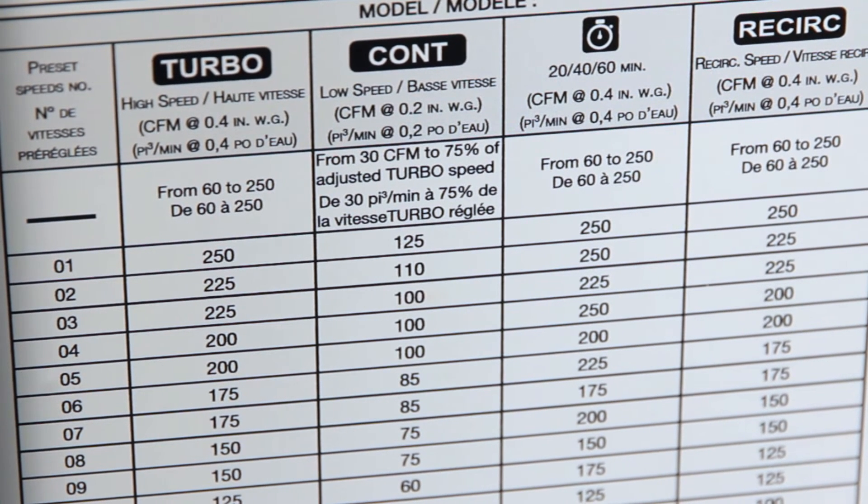You may choose between two easy balancing options. Preset speeds, where you will only need to balance the unit on turbo speed. Many preset speed ranges are available on these unit models. Use these speed ranges for balancing the unit using a specific CFM, which you'll find on the inside panel door of the unit.